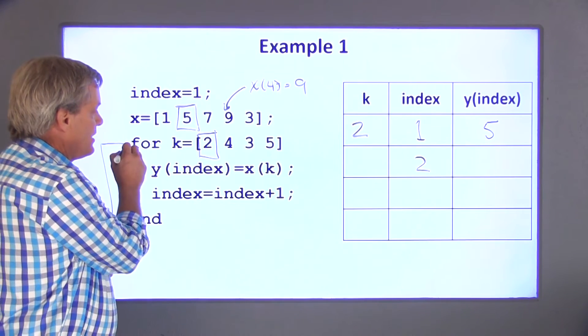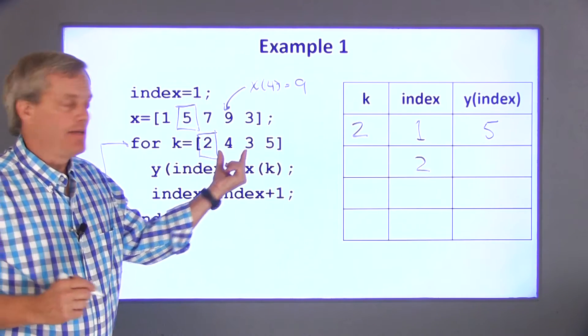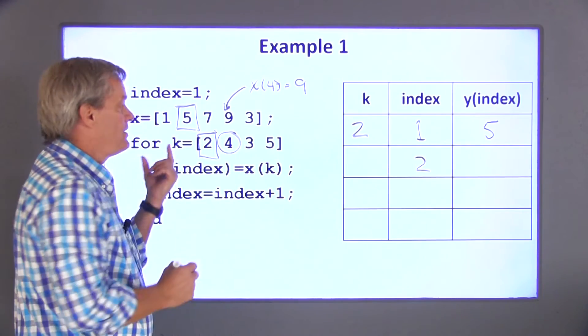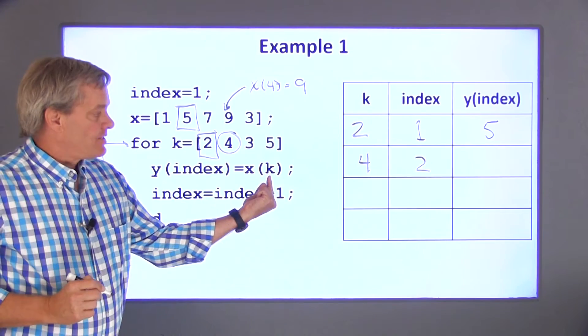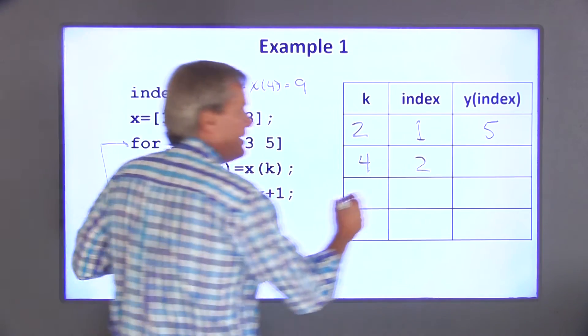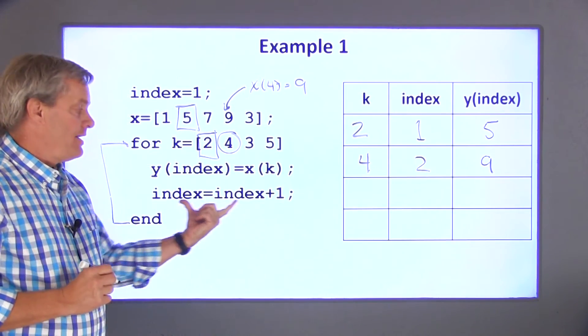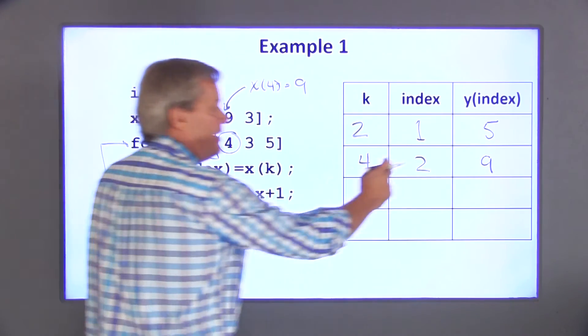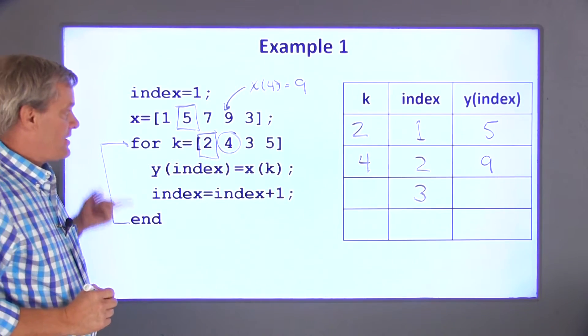That takes me back up to the for statement. k takes on the next value in the array. So the second time through the loop, k is equal to 4. x of 4 is the fourth element in the array. That's 9. So y of index is set equal to 9 after the second time through the loop. Index is equal to index plus 1. So 2 plus 1 is 3.